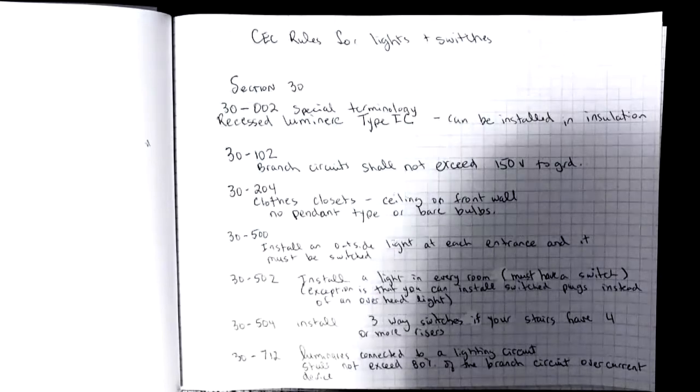30-502 indicates that we need to install a light in every room and it must have a switch. The exception to that is in a master bedroom or bedroom where you have switched plugs, then you don't have to have an overhead light.